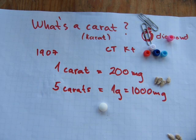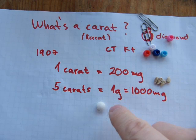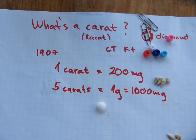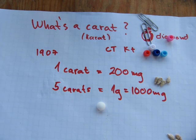Just to visualize one carat: that's one gram. If you divided this into five, that would be one carat. So that's how carat weights work when it comes to diamonds.